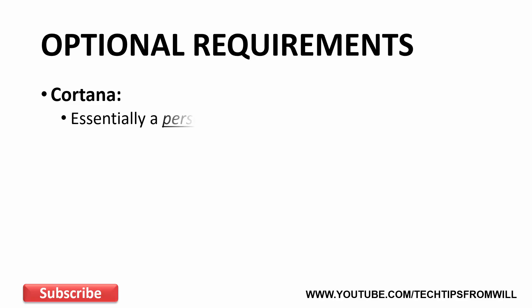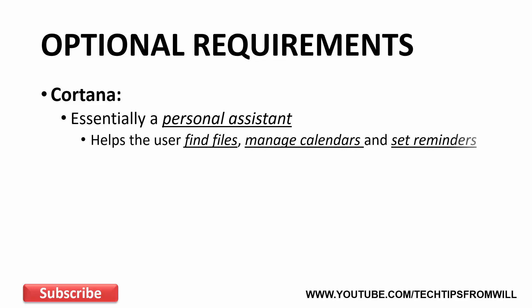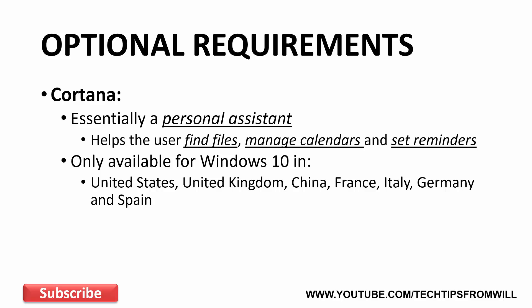The first feature I will look at is Cortana. Cortana is a brand new feature for Windows 10 and is essentially a personal assistant. Cortana is designed to help the user accomplish tasks such as finding files, managing calendars, and setting reminders. At the time this video was recorded, Cortana is only available for Windows 10 in the United States, United Kingdom, China, France, Italy, Germany, and Spain. If you are using Windows 10 outside of these markets, Cortana will not be available to you, at least not at this time.